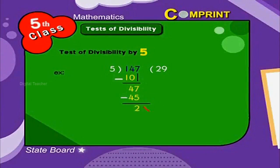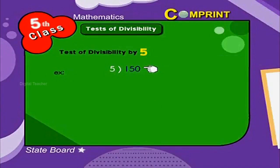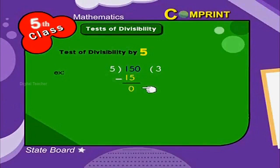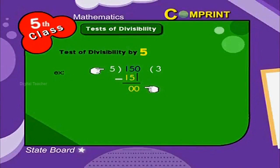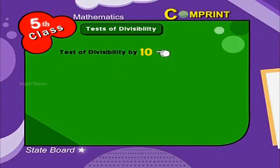Look at another example: 150 divided by 5. 5 into 15 is 3, remainder 0. Bring down 0. Since 0 is lesser than 5, add 0 in the quotient.